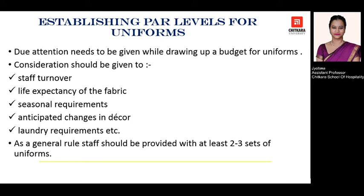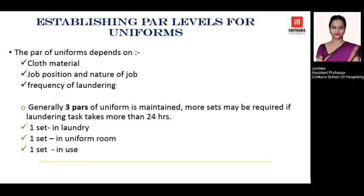While developing the par number for uniforms, the points which need to be considered are: first, the cloth material — the fabric you are selecting; second, the job position and job profile, meaning for which designation you are going to design the uniform; third, and most importantly, the frequency of laundering — this means at what intervals that uniform will be washed in the laundry.